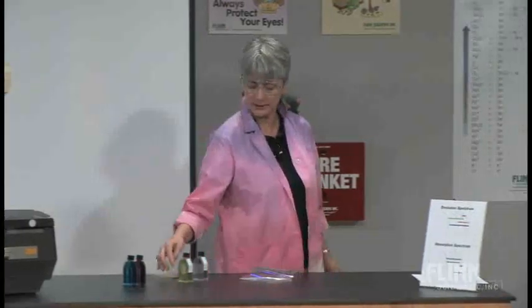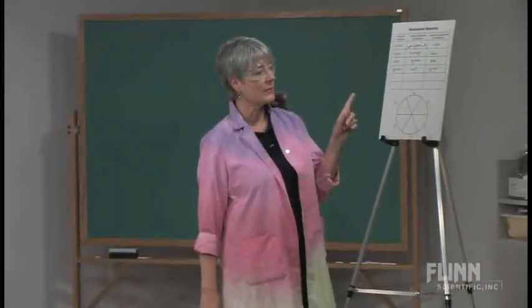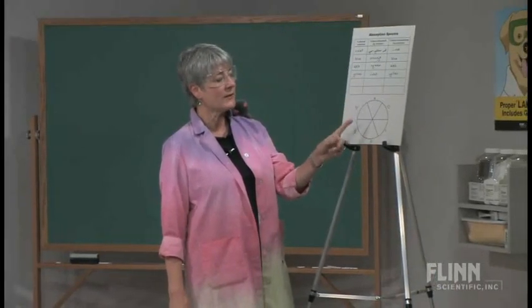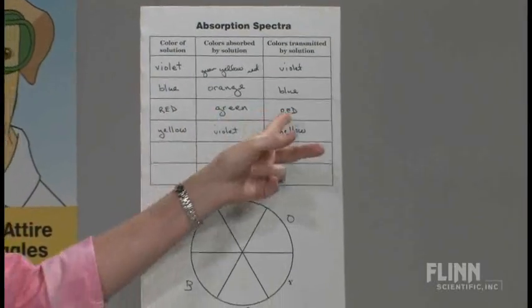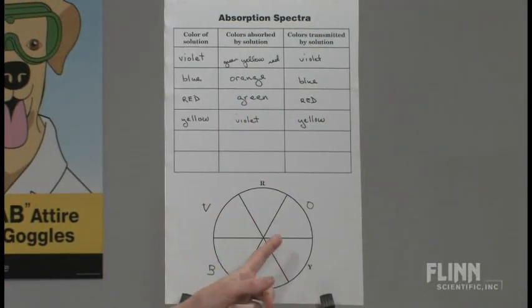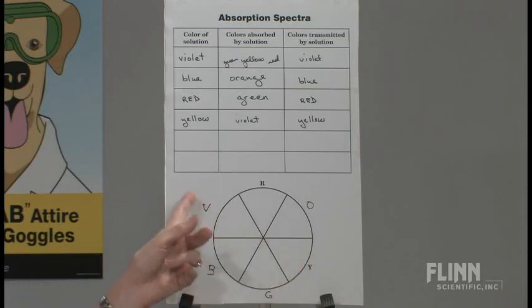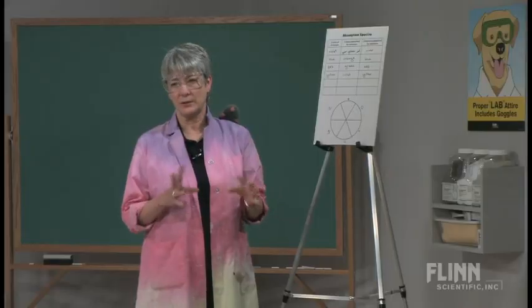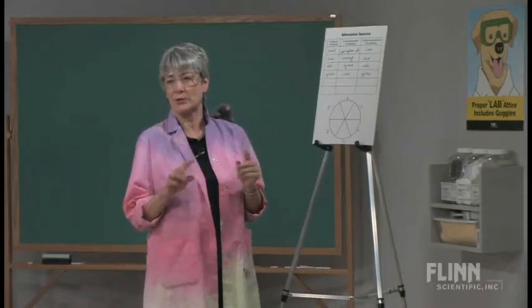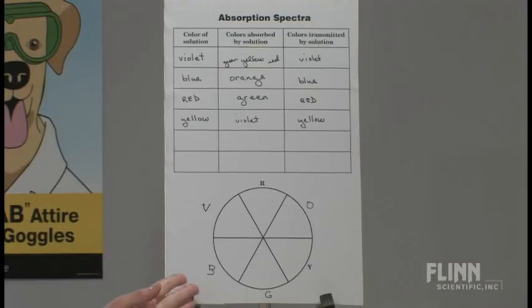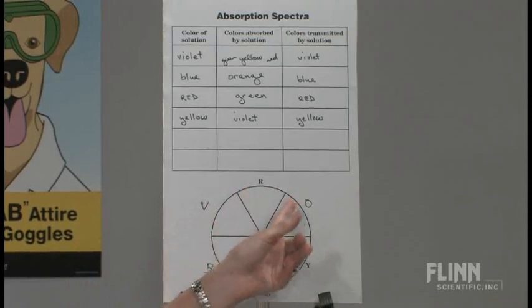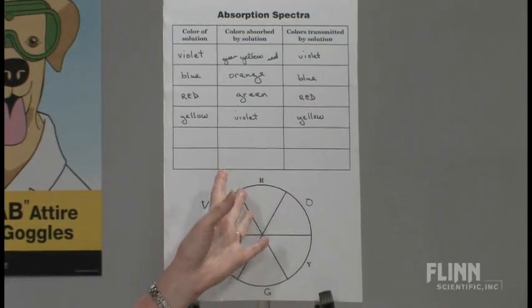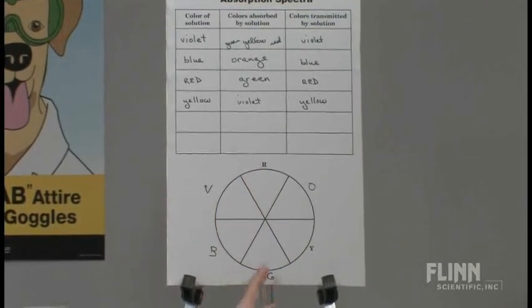I'm going to walk over to this chart. What the students are going to observe is that you've got complementary colors. So if a solution absorbs green, it appears red — the red solution transmitted the red. And if I have a yellow solution, it's absorbing in the blue-violet range. With those solutions, they're not pure colors, so it's going to be just a little bit more diffuse. But this chart can be used for predicting colors that you would expect to see absorbed. So if I have a solution that is a pale pink — that's in the red region — I would expect to see absorption in the green area.